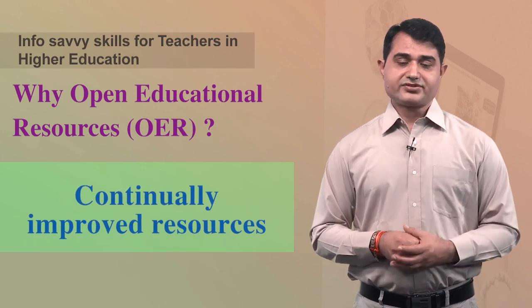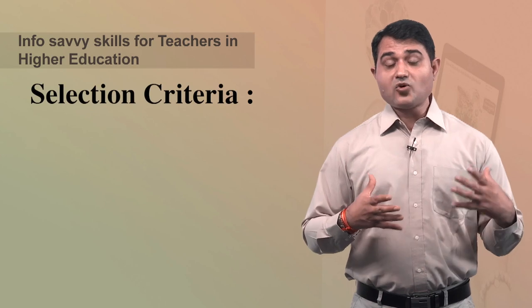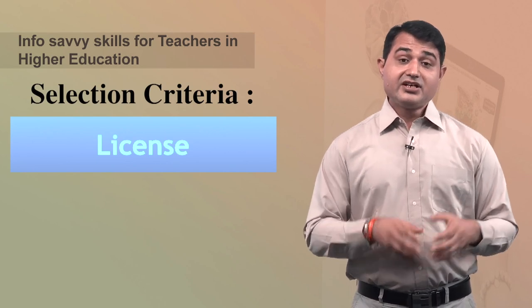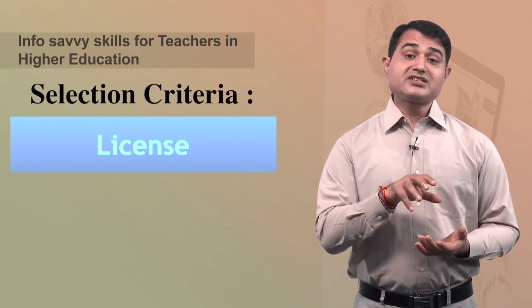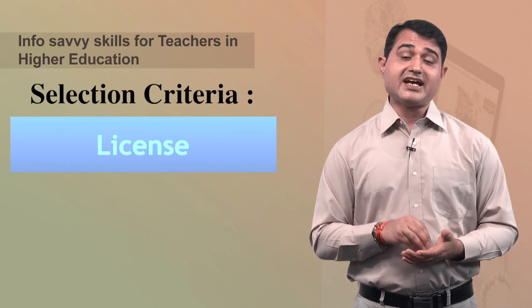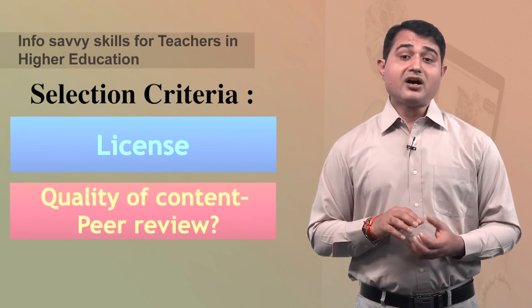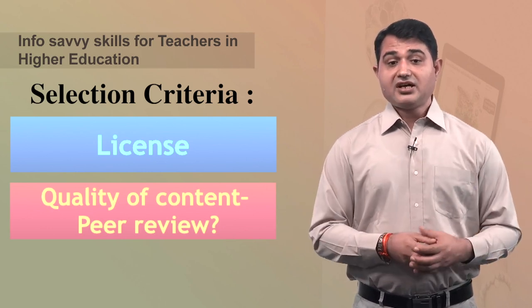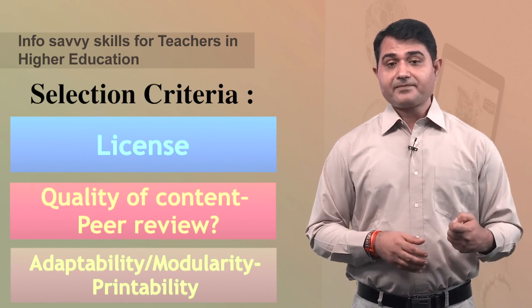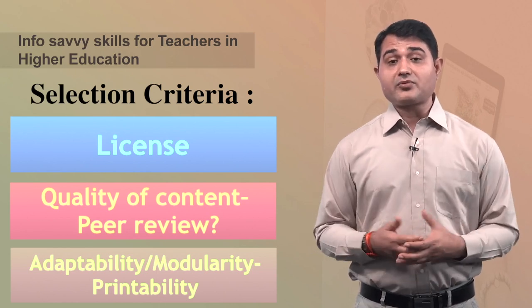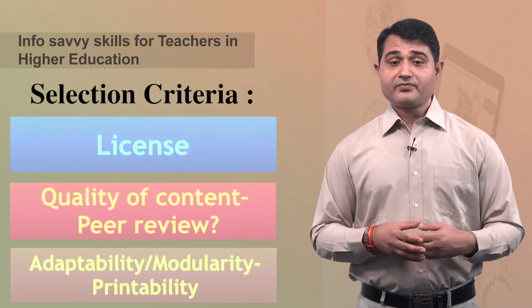Continually improved resources. When selecting open educational resources as a tech-savvy teacher, the first step is to find out the license of the content — it should be an open license so others can use, edit, and modify it for their pedagogical needs. Consider the quality of the content and ensure a peer review process for adaptation. Also consider adaptability, modularity, and printability — the content should be in a format that is easily adapted and printable if needed.